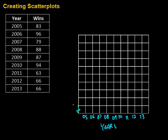I'm going to start at 60, and then like I said, we'll go up by five. So, 60, 65, 70, 75, 80, 85, 90, 95, and 100. And this is the number of wins, so let's just put wins over here.